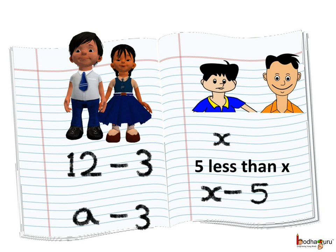Same way, Anand scored 5 marks less than Ajay in maths. So if Ajay scored x numbers in maths, then Anand scored 5 numbers less than x, i.e., x minus 5.